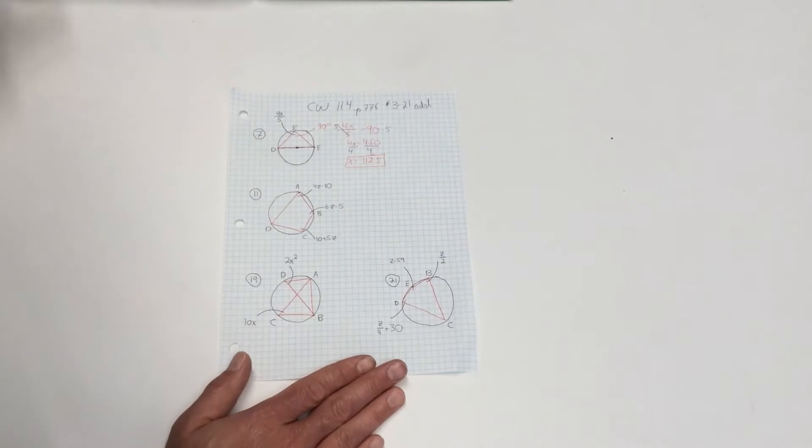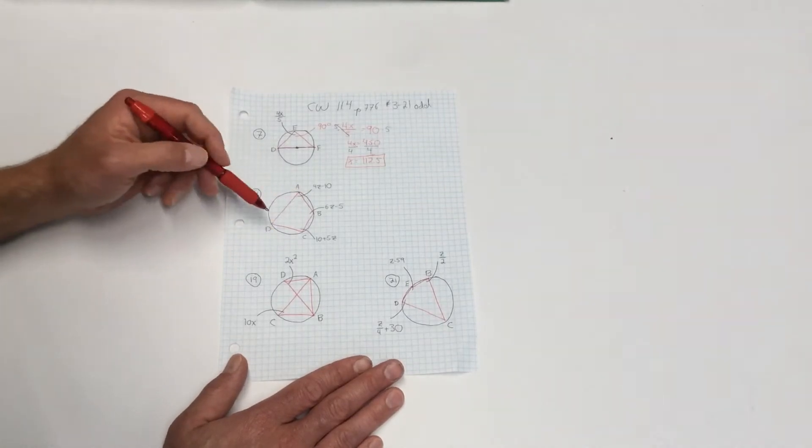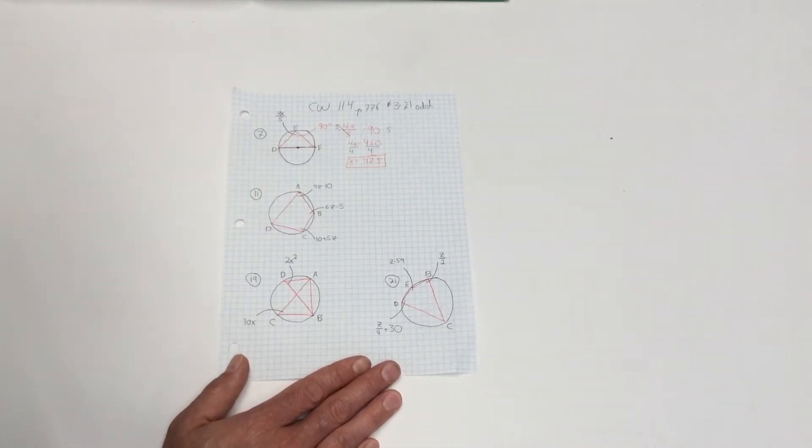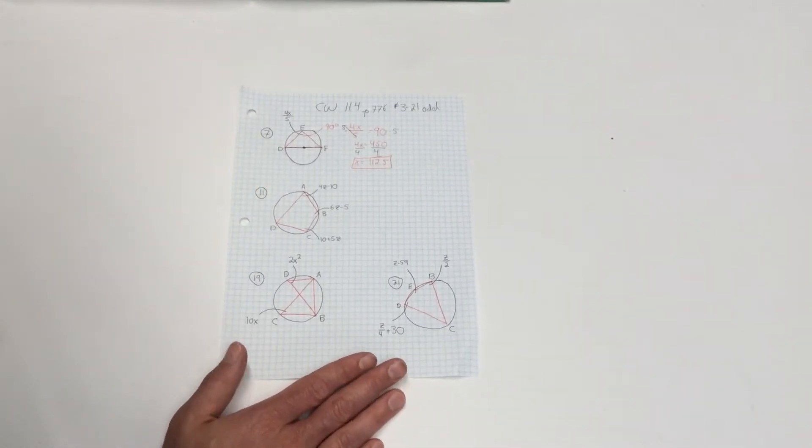Okay, number 11. You've got a quadrilateral. And number 11 is saying I need to find angles A, B, C, and D. So I got 4 answers. I'm going to find all 4 angles. We did one like this, just like this on the homework.